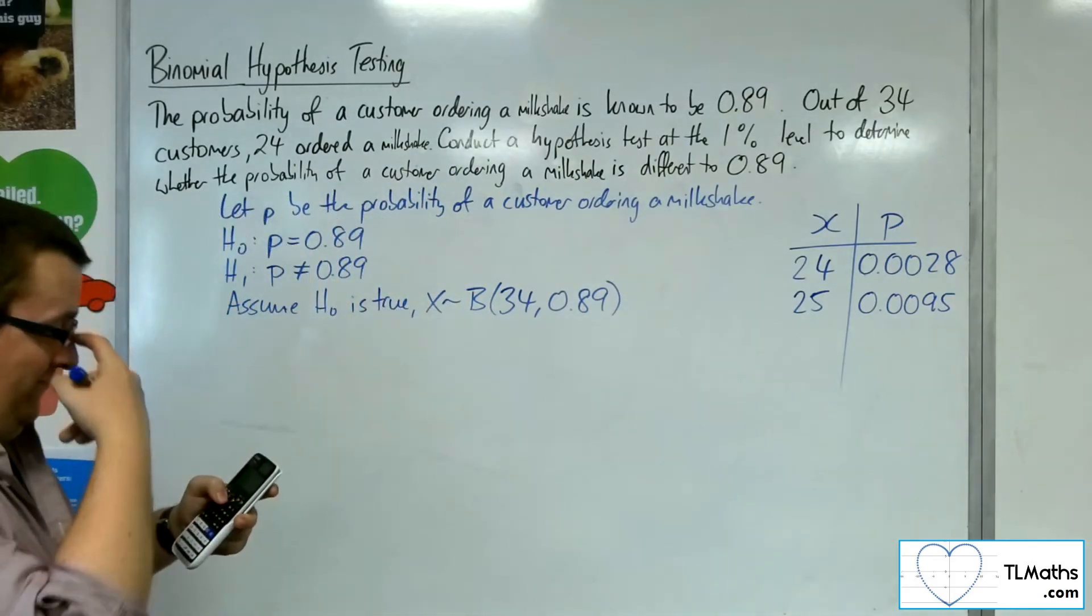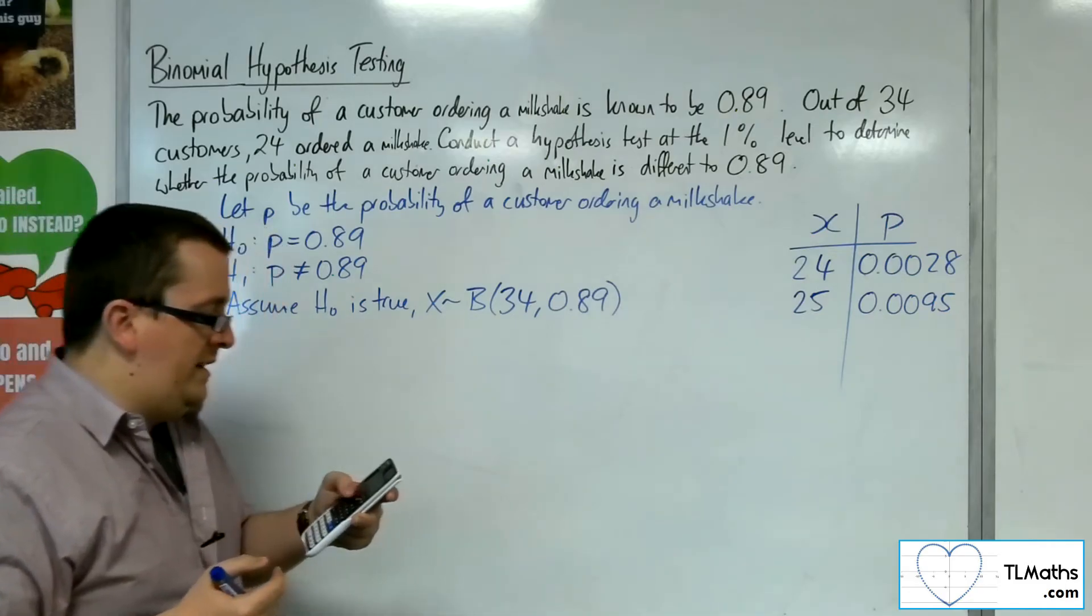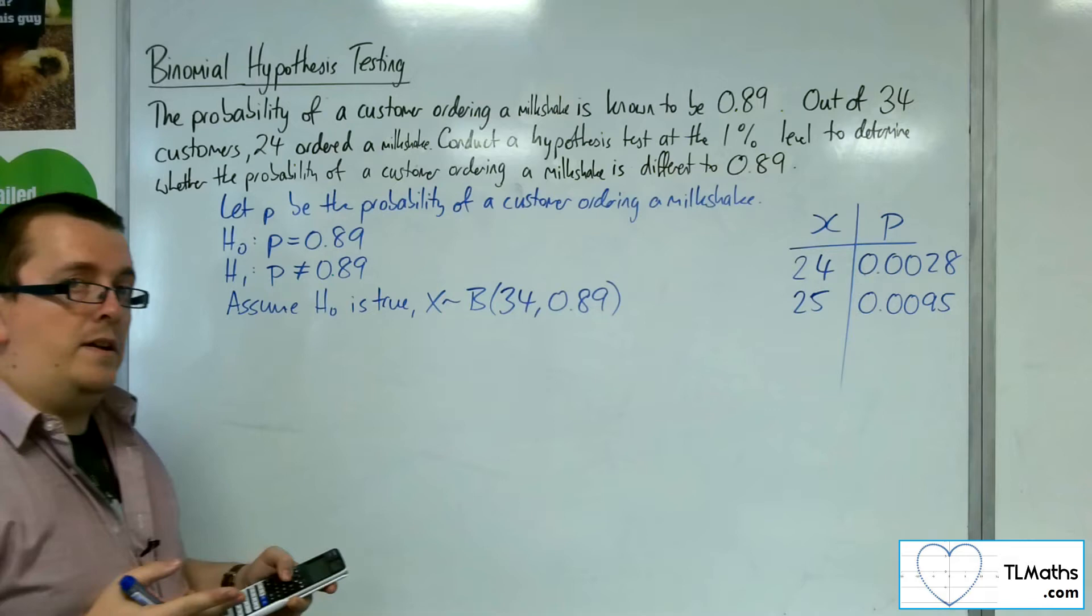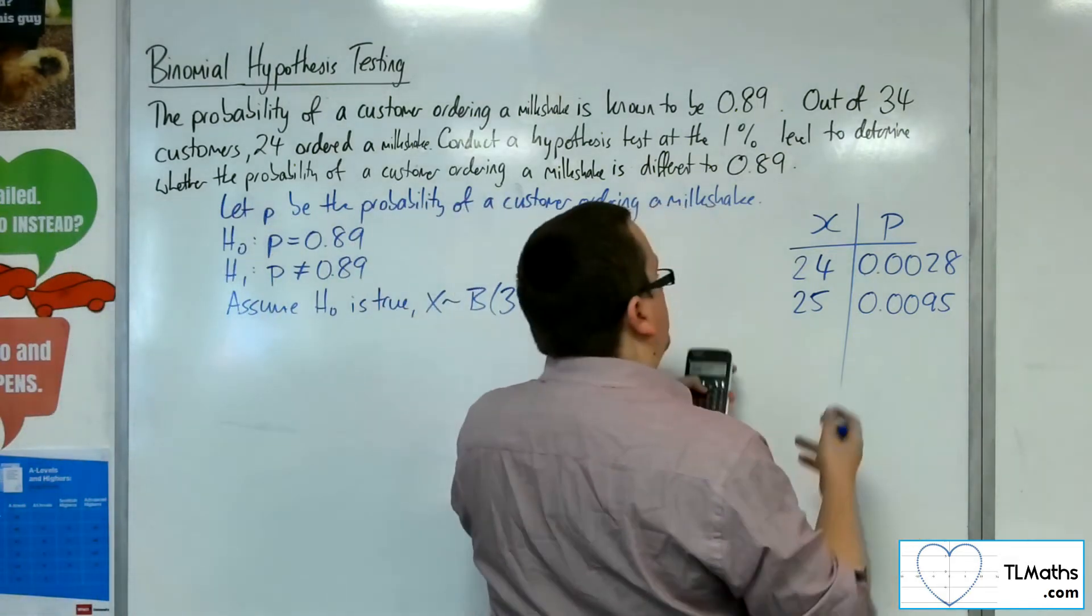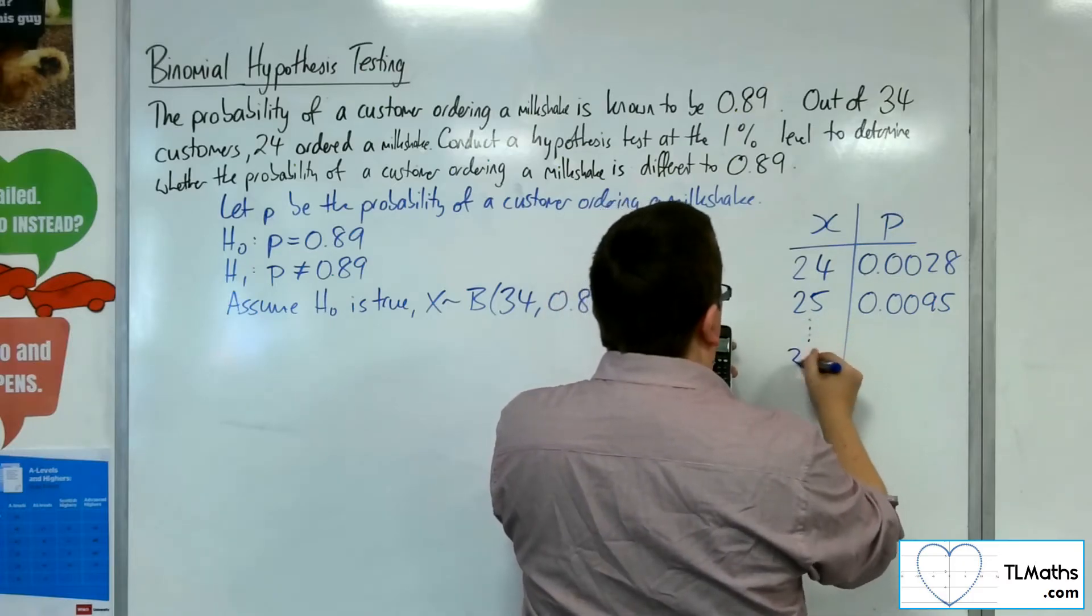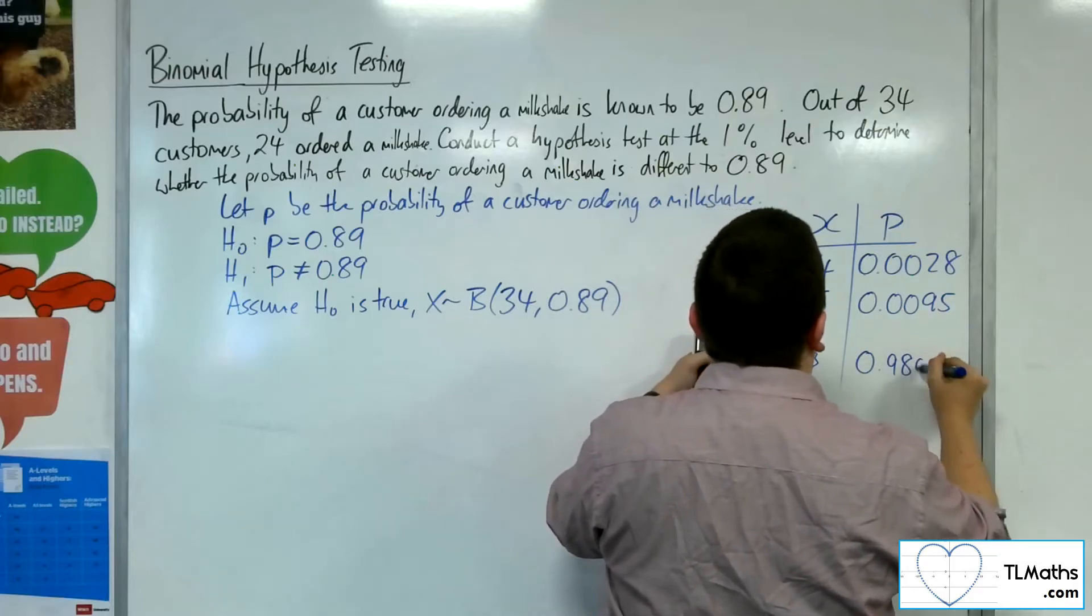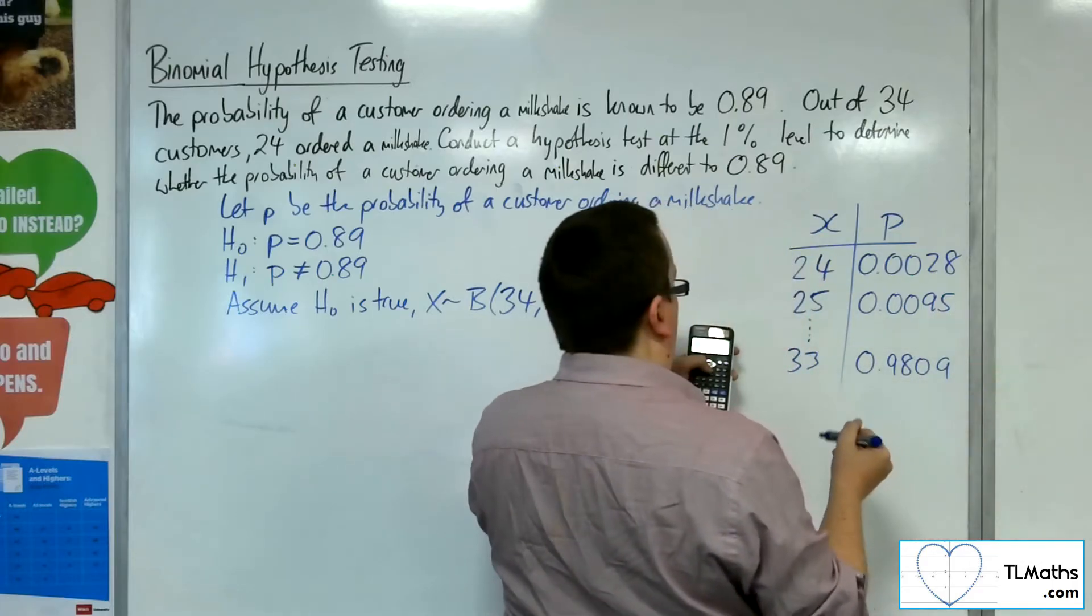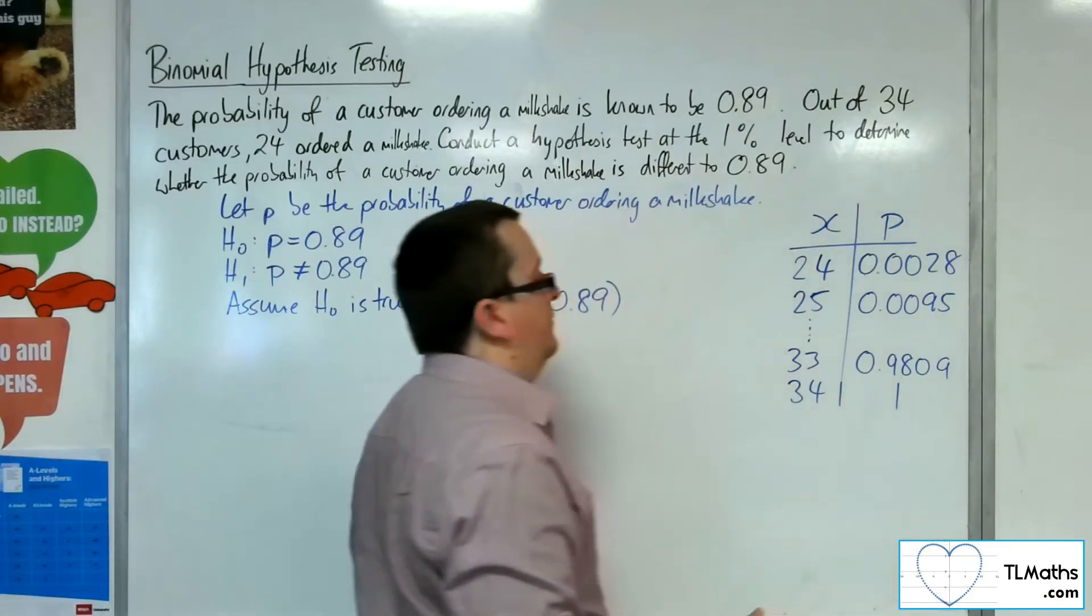Now at the top end, I'm looking for an overlap of 0.995. I've got 33 is 0.9809, and 34 as 1.